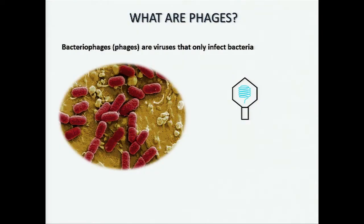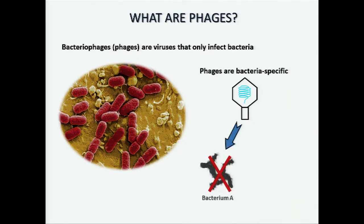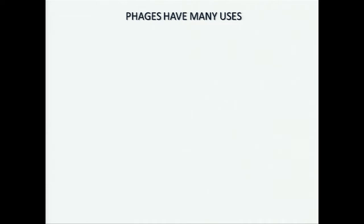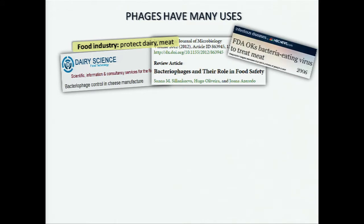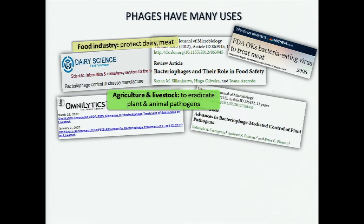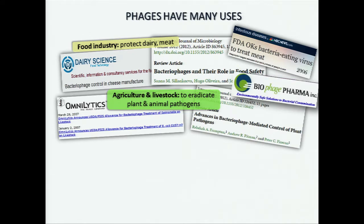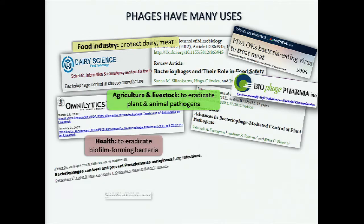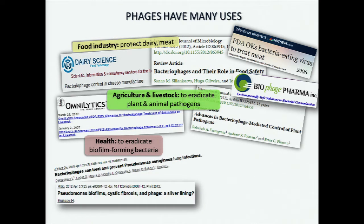Phages are so specific to bacteria that they might be able to infect and eradicate one type of bacterial pathogen, but not another. Because of this, phages have many uses. They're used in the food industry to protect dairy and meat, in agriculture and livestock to eradicate plant and animal pathogens, and in health settings to eradicate biofilm-forming bacteria.